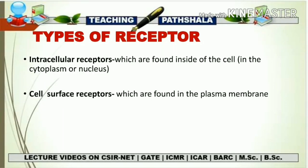With this we have completed the portion on ligands. Now let's see the types of receptors. The first type is the intracellular receptor and the second type is the cell surface receptor. Intracellular receptors are found mainly in the cytoplasm or in the nucleus, while cell surface receptors are found in the plasma membrane, bound to the outside of the cell surface. Intracellular receptors bind with lipophilic ligands, since those ligands can cross the lipid bilayer. Hydrophilic ligands, which cannot cross the lipid bilayer, bind to cell surface receptors.